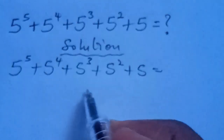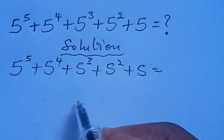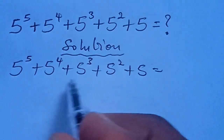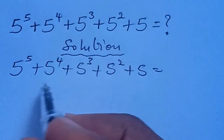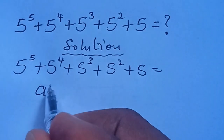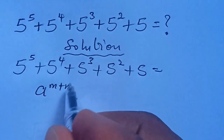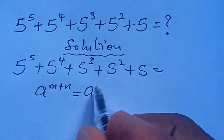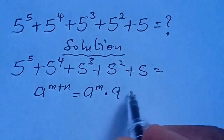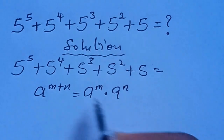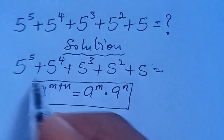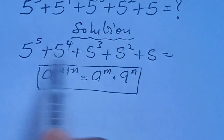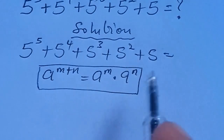What we do here is rewrite this expression in order to expose the common factors. We adopt this identity: if we have a to the power of m plus n, this can be written as a to the power of m multiplied by a to the power of n. If we adopt this identity, we can go further to use it to simplify the expression.